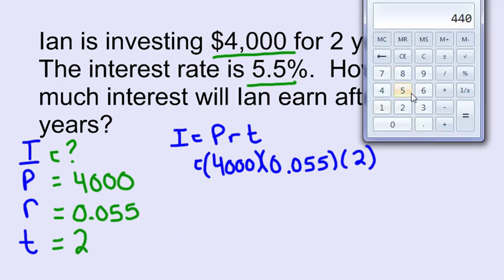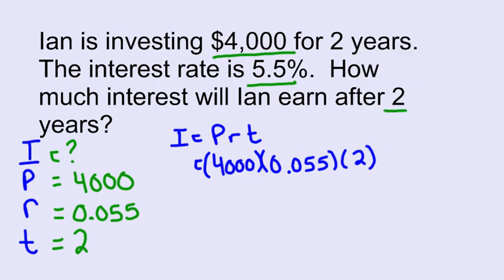If we take our calculator and multiply these together, we're going to have 4,000 times 0.055 times 2. And that gives us 440.